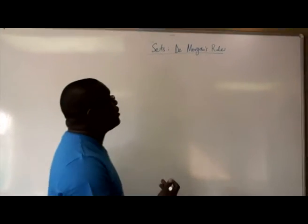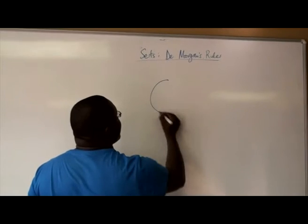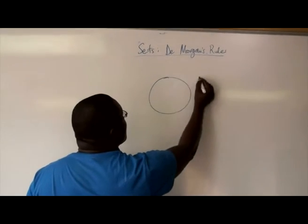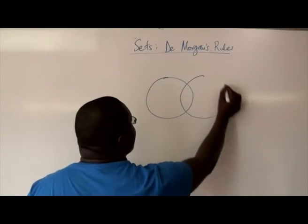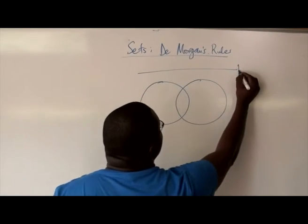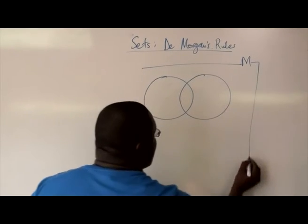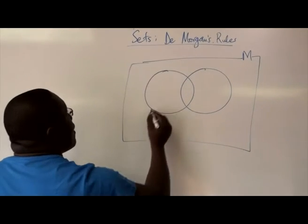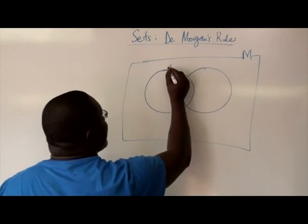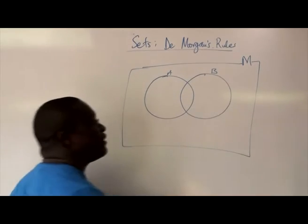I'm going to use a Venn diagram to illustrate the sets. I have my superset M and then set A and set B.